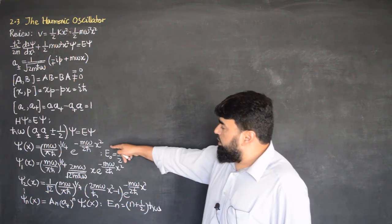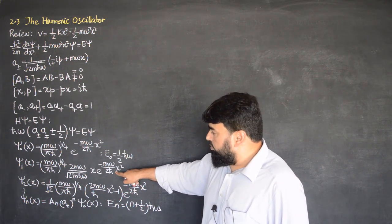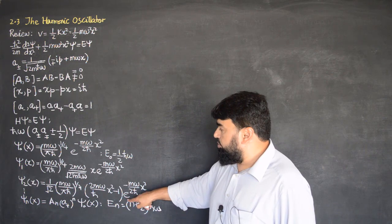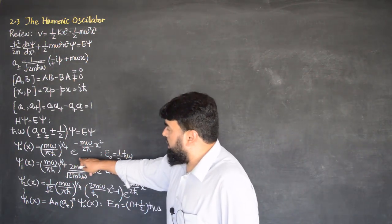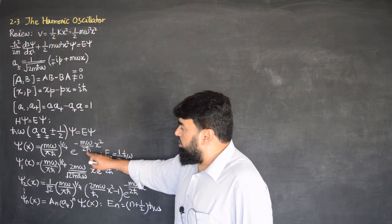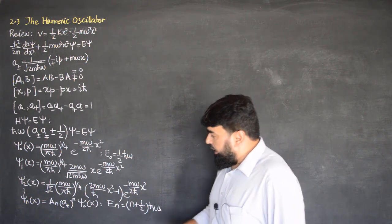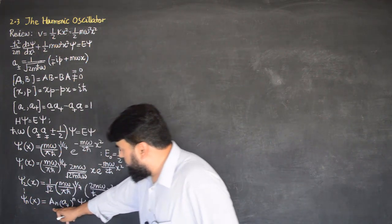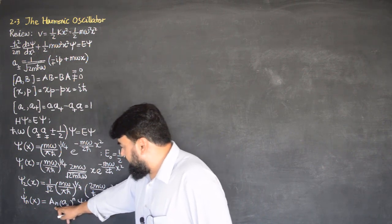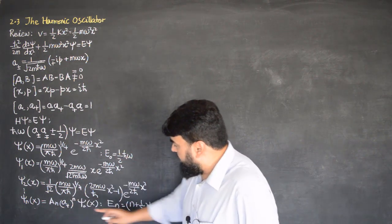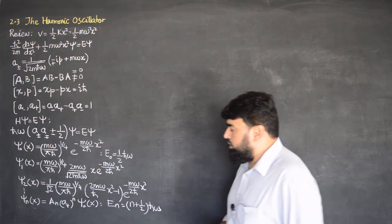We found that the first state is an even function, the second is an odd function, and then even again — so the states of the harmonic oscillator are alternately even and odd. We wrote the generalized nth state wave function as Aₙ times (a+)ⁿ applied to ψ₀(x), with energy equal to the corresponding eigenvalue.